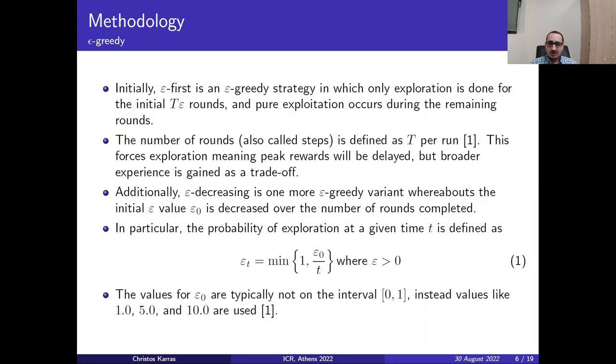Moving on to the methodology on the epsilon greedy, the ε-first is another variation of the ε-greedy, which is a strategy in which only exploration is done using the initial T rounds and pure exploitation occurs during the remaining rounds. The number of rounds, also referred to as steps, is defined as T per round. This forces exploration, meaning peak rewards are delayed, but as a trade-off we have a broader experience. So the algorithm exploits the other peers in a better way.